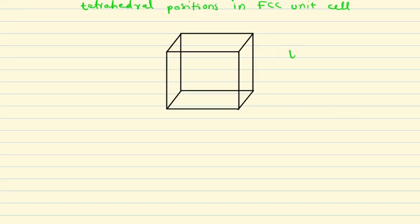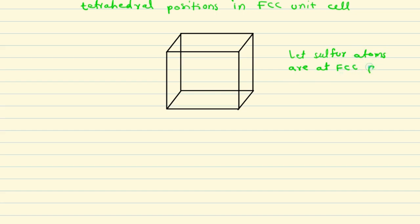Now let's draw the structure. If this is a cubic unit cell, sulfur atoms are at the FCC positions. This green circle will indicate sulfur atoms inside the cube.